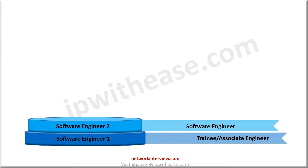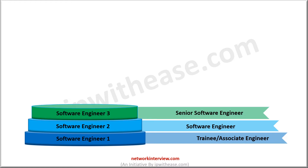The next step in the ladder is Software Engineer 3, also known as the Senior Software Engineer. You should have advanced skills and knowledge to become a senior software developer. The minimum work experience required is around 3 to 4 years, and the average annual salary of Software Engineer 3 at Adobe is $225,000 to $250,000.